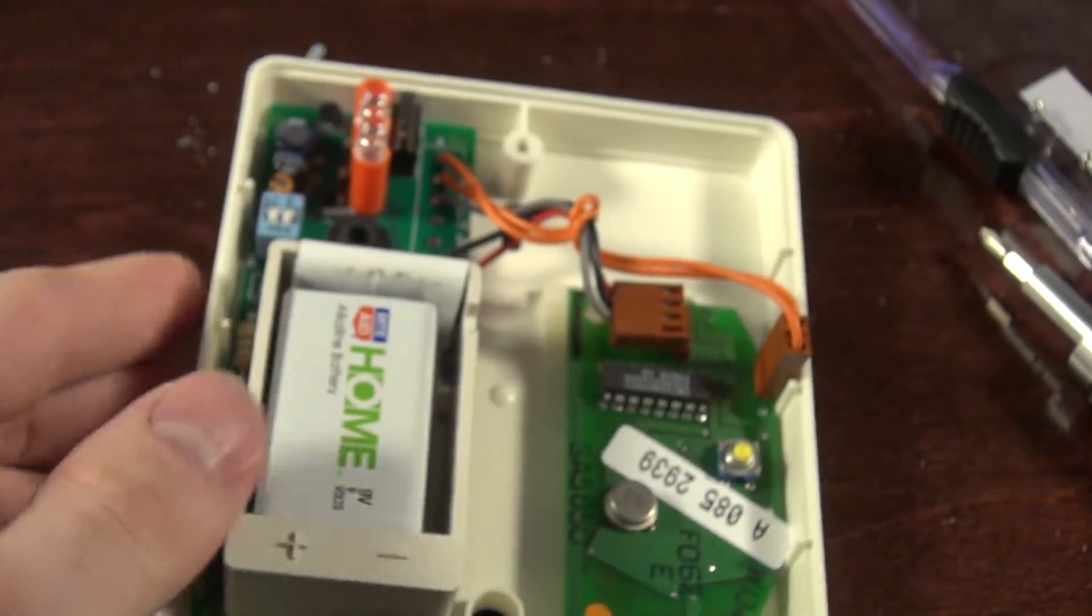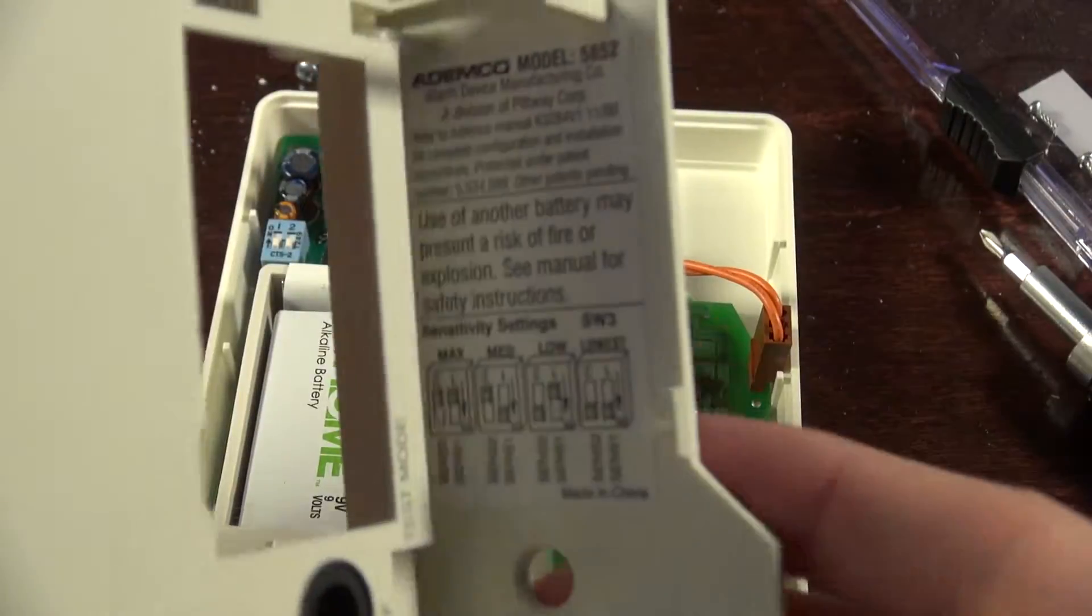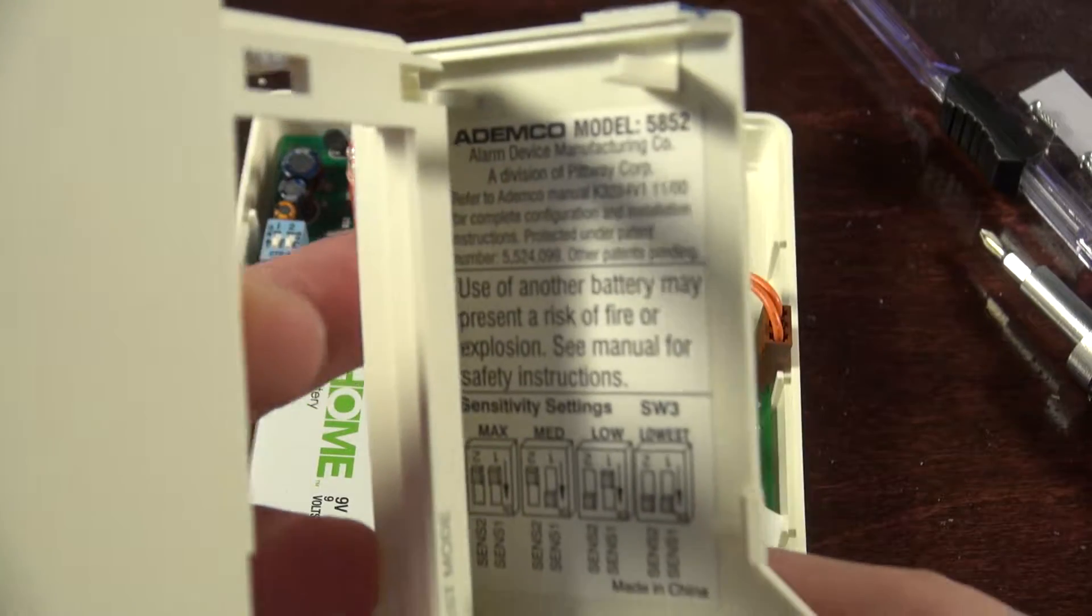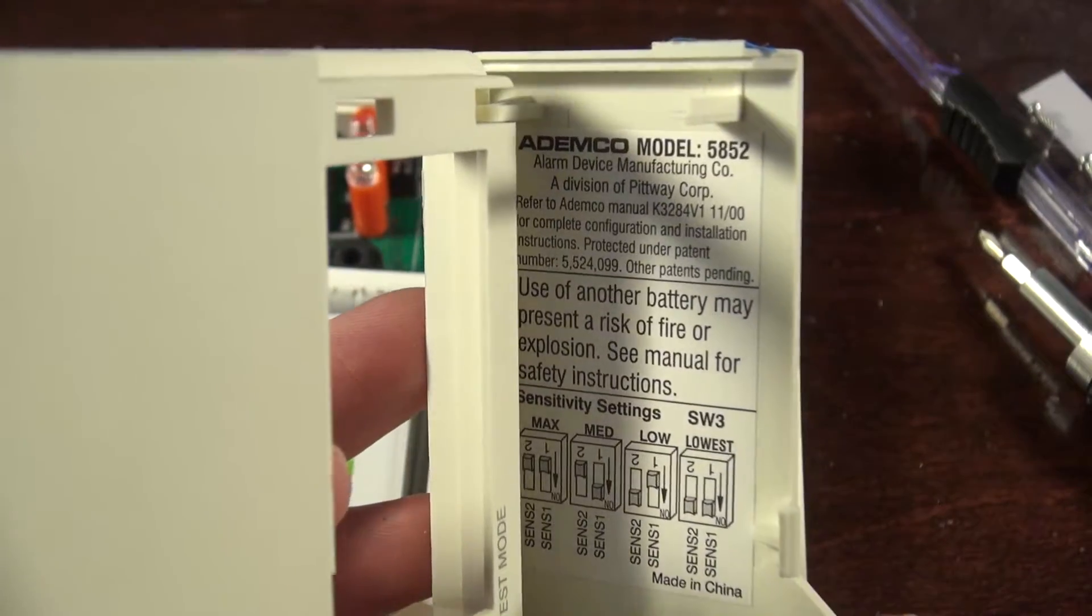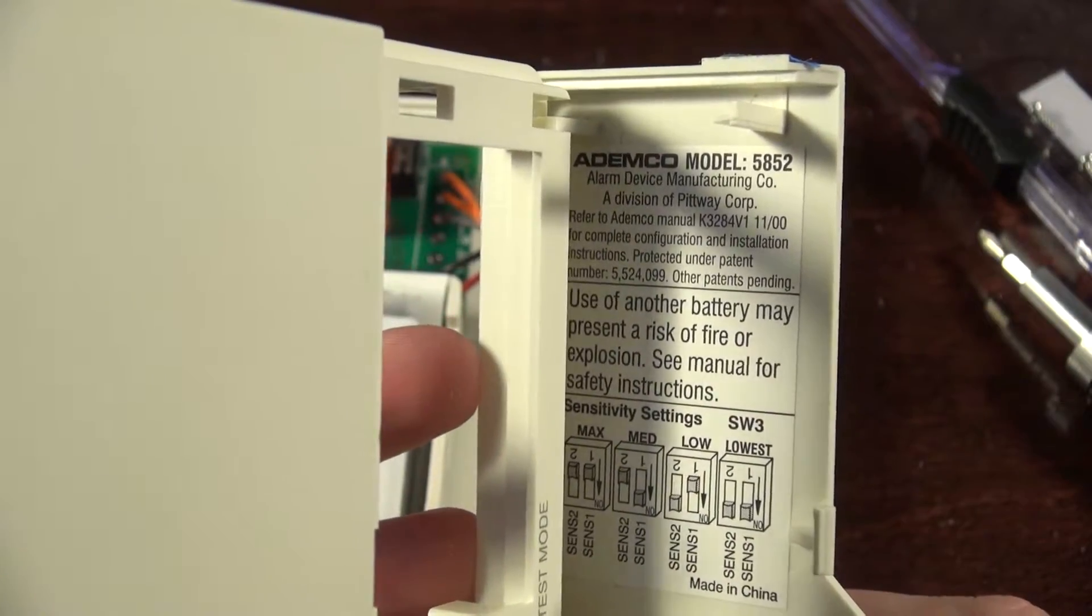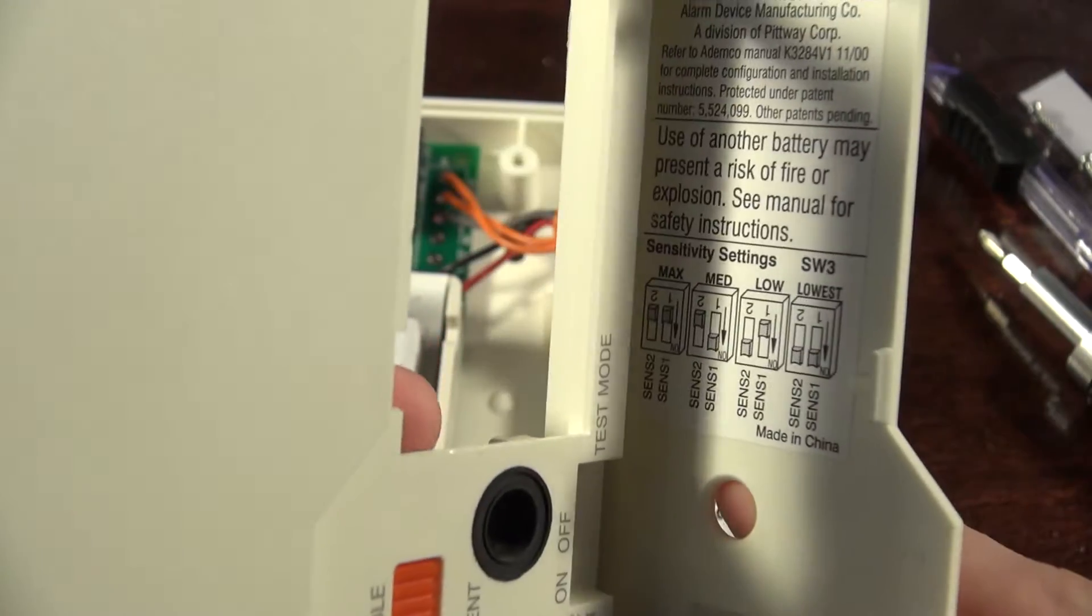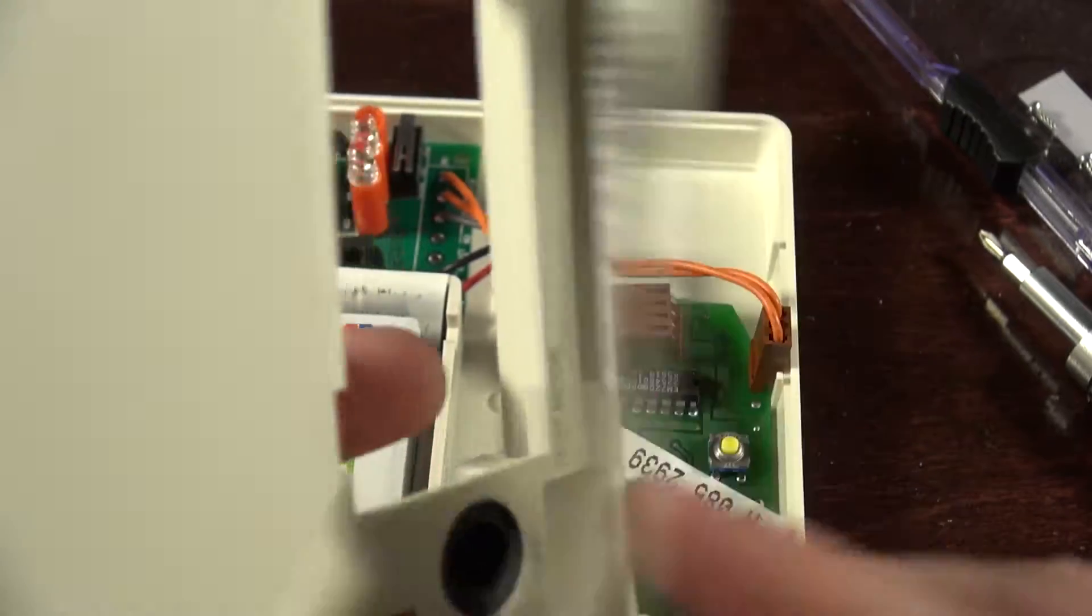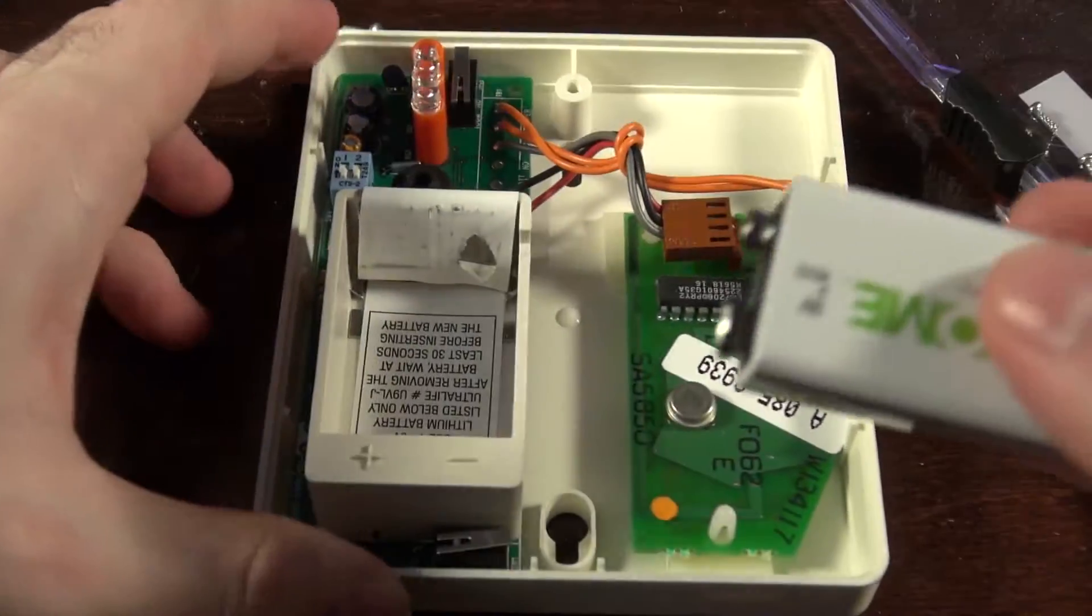All right, so we'll pop the hood off and... oh, look. I didn't even realize there's directions on here. Don't use alkaline or anything else weird. And these are just sensitivity switches. Okay. So you're just doing binary for the sensitivity. So it has four lovely selections.